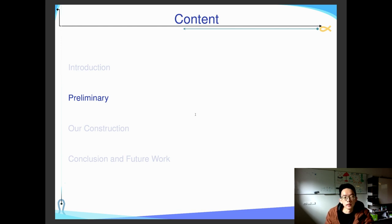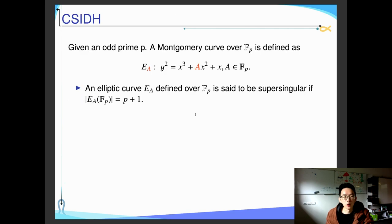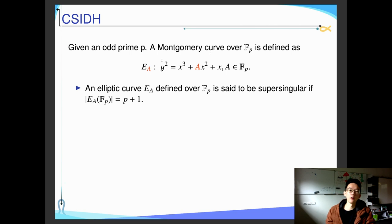For our cryptosystem, the isogeny tool we rely on is called CSIDH. Here we give a brief overview. A Montgomery curve with one variable is defined in a standard form. An elliptic curve defined over a prime field Fp is said to be supersingular if the group order is p plus 1.